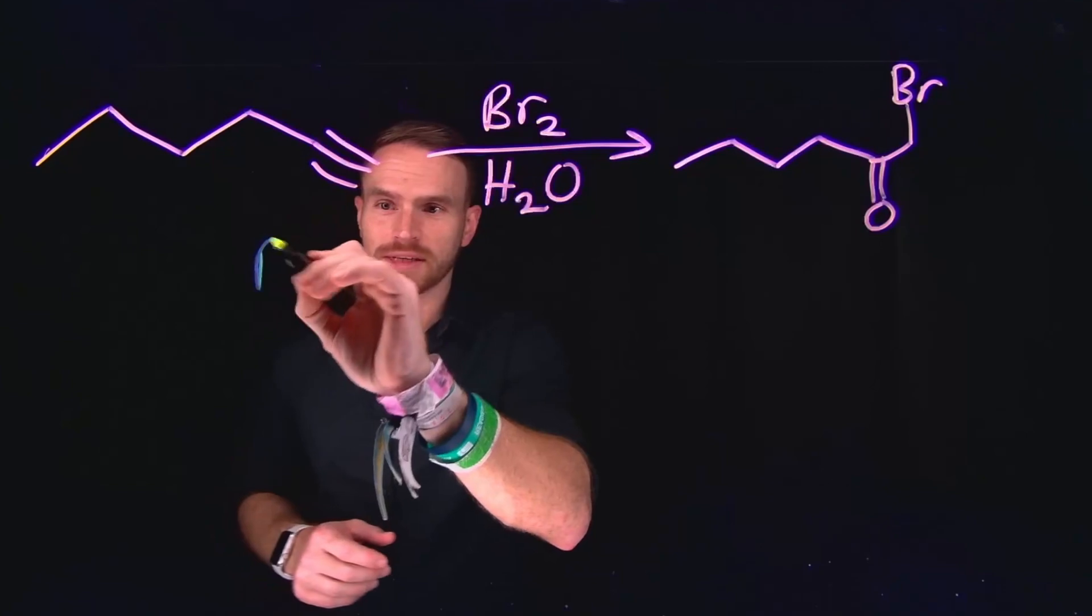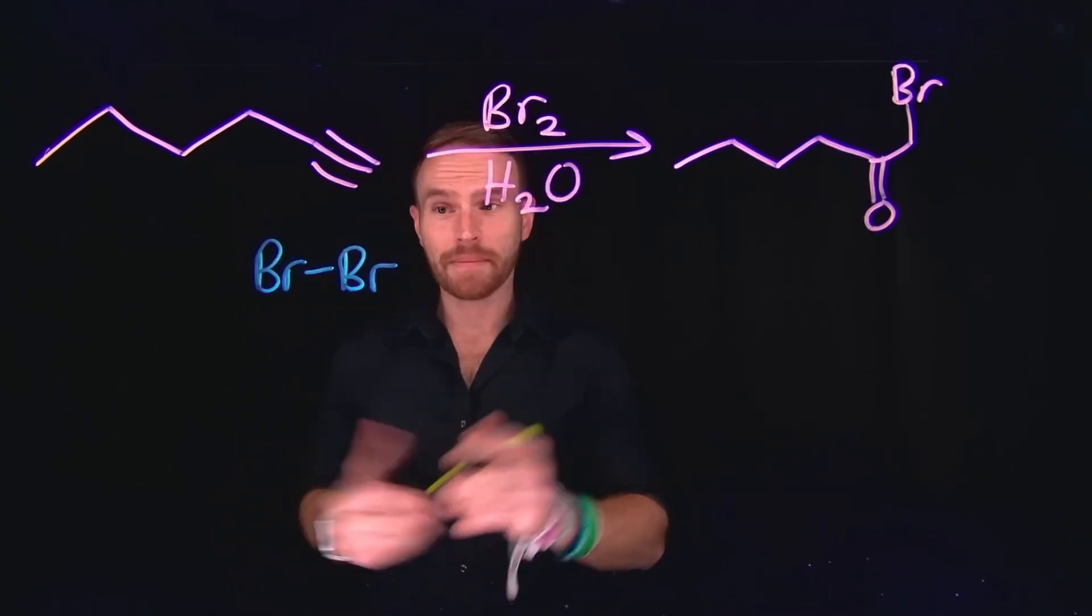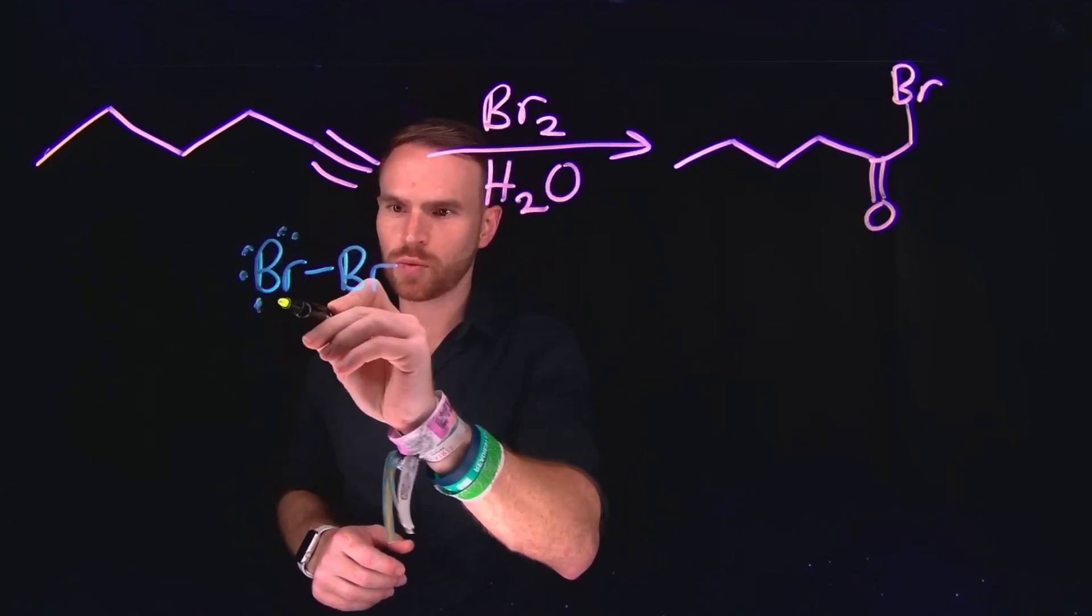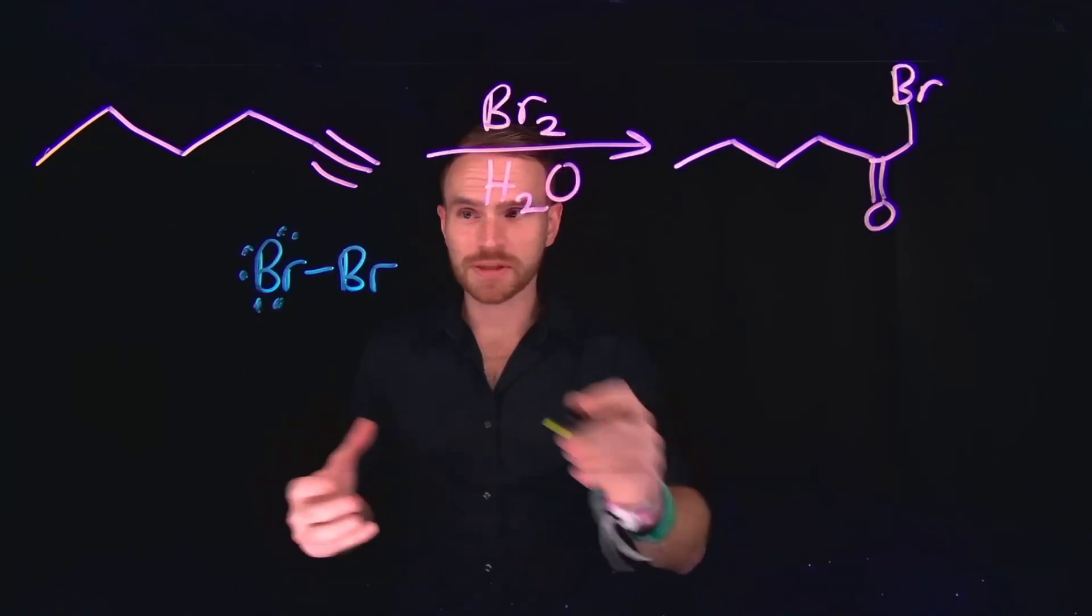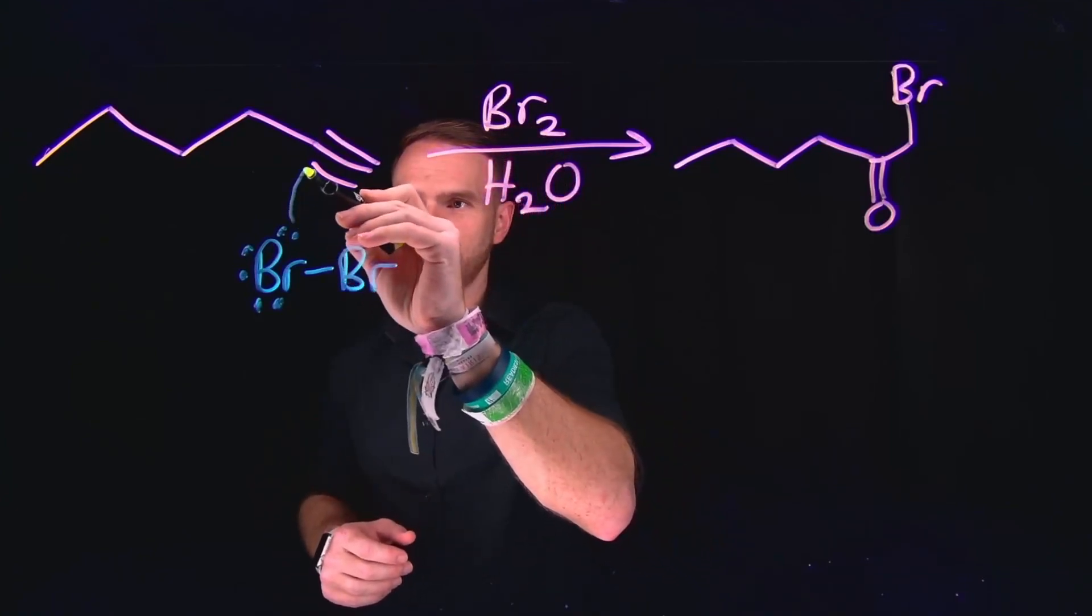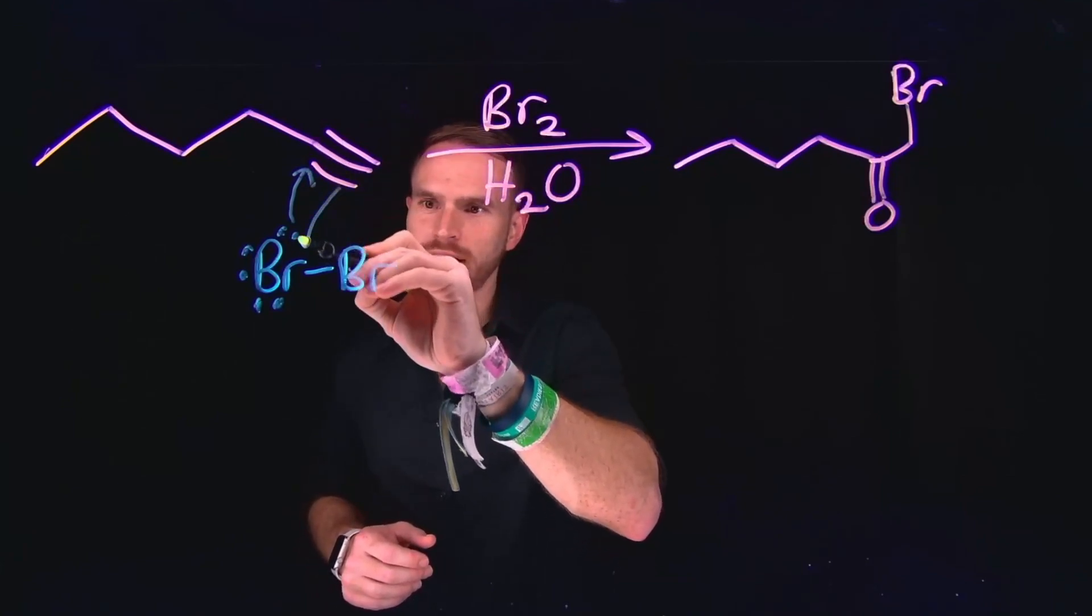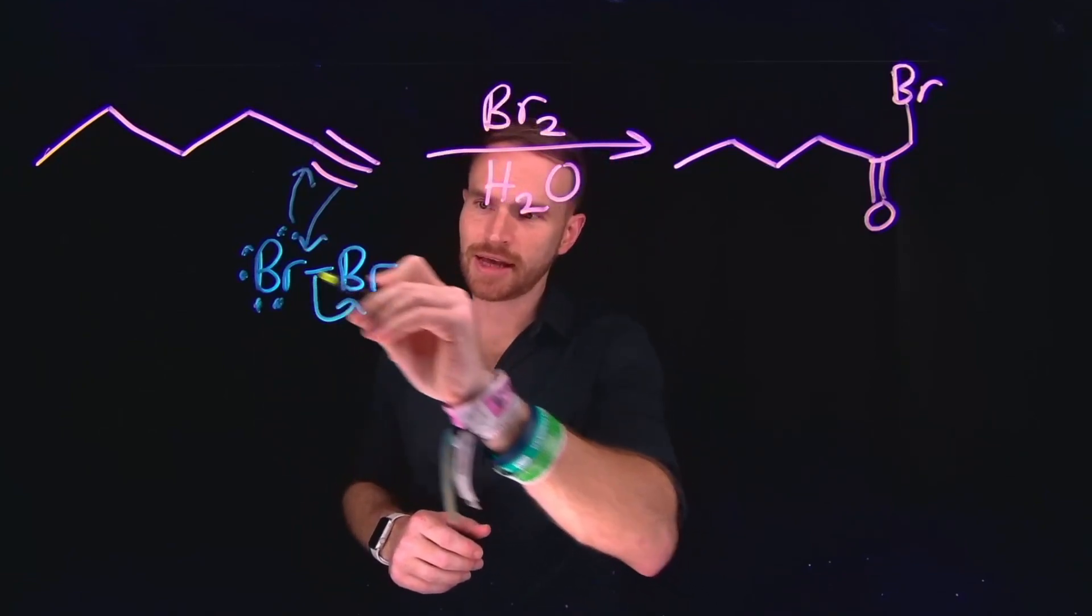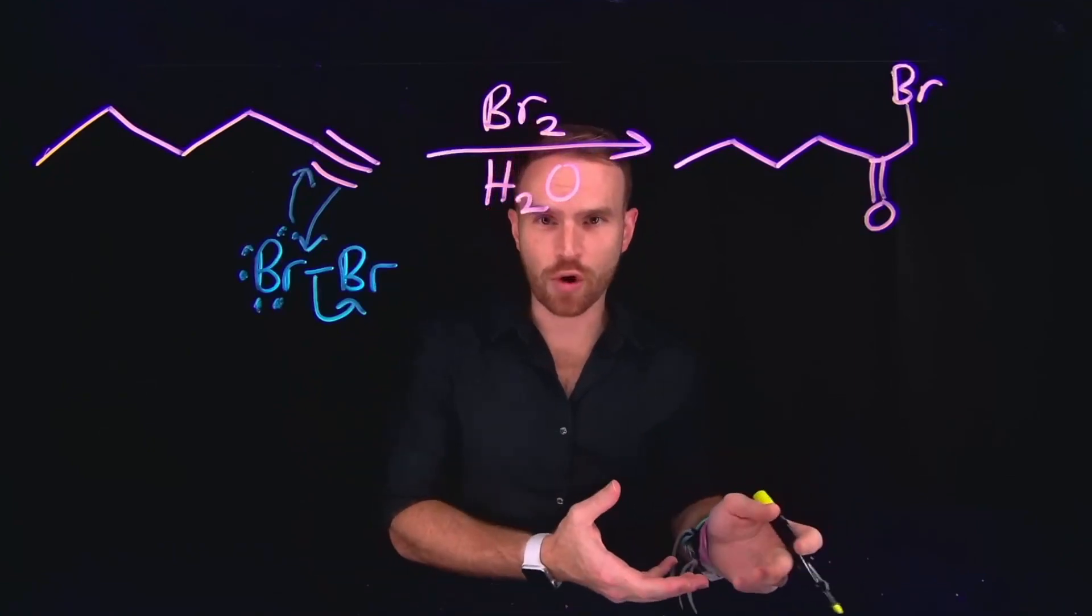The first step in this mechanism is going to be electrophilic attack to form a bromonium ion. Between these alkynes, there are plenty of positions with which we can get electron flow between these two molecules. Specifically, this bromine can attach at this carbon, and then the subsequent flow of electrons can go back to the bromine atom. This is going to kick off these electrons, which were formerly a covalent bond between bromine, to leave behind bromide.